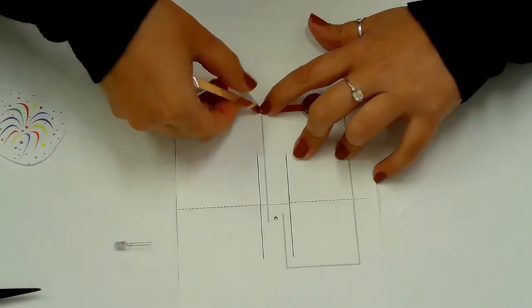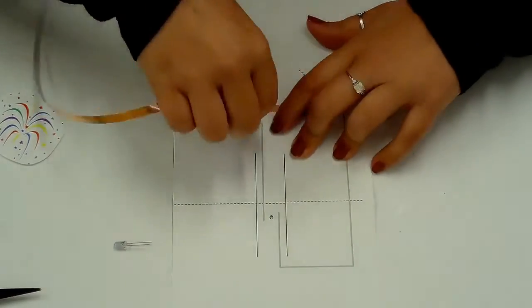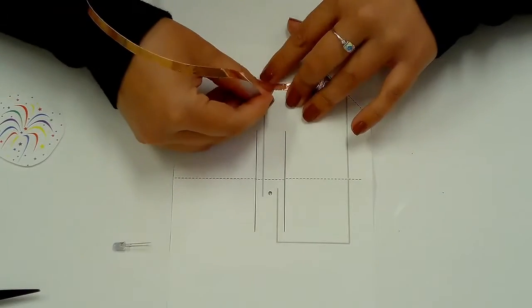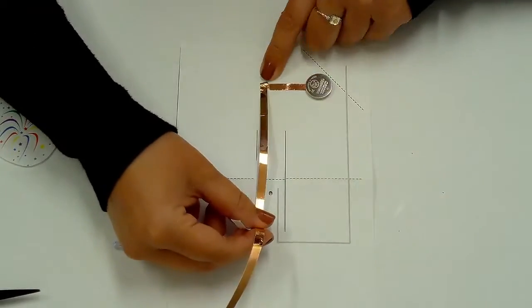To make the corners, fold the tape in the opposite direction of the gray line. Then fold it back to continue along the gray line. Once you get to the end, tear off the rest of the copper tape.